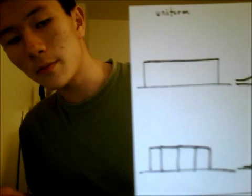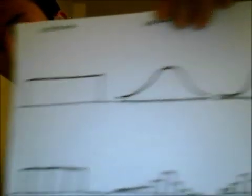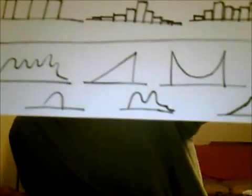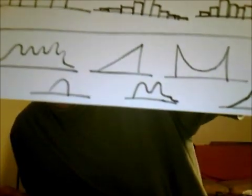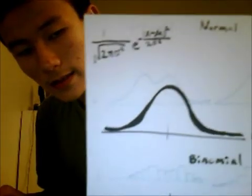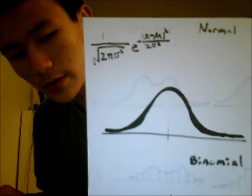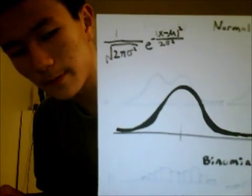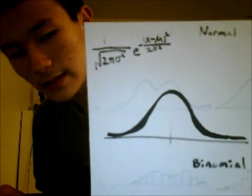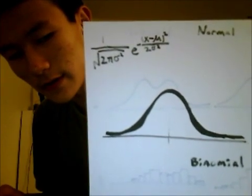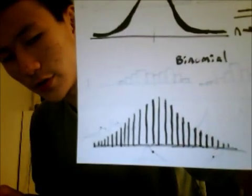There are many different shapes of distributions: uniform, unimodal, and bimodal, continuous and discrete, and many others. This is a particularly important unimodal distribution called a normal distribution. It is the infinite case of the binomial distribution.